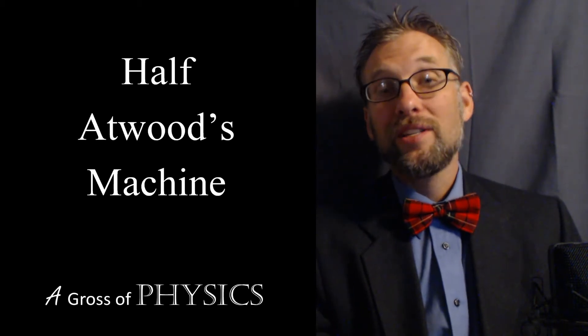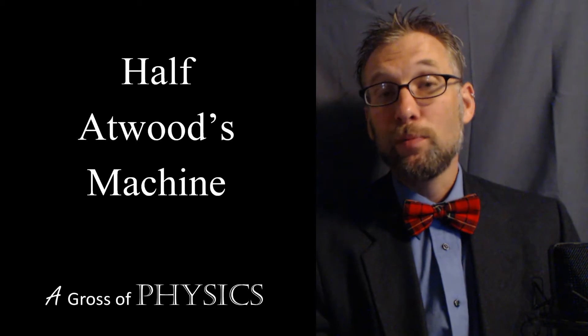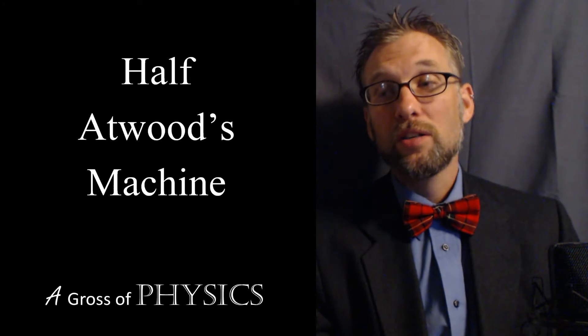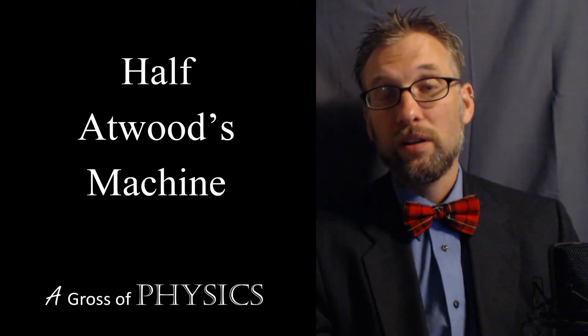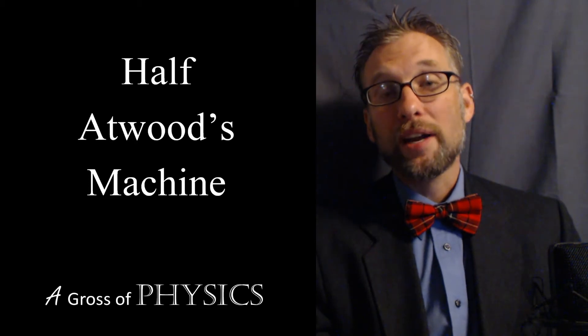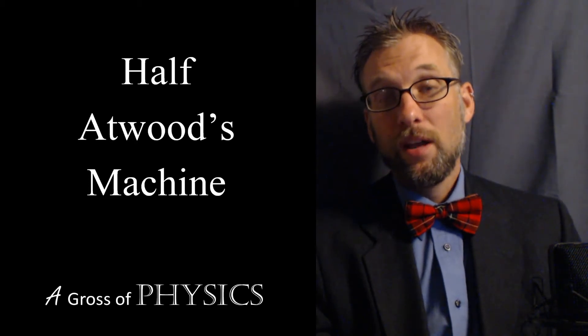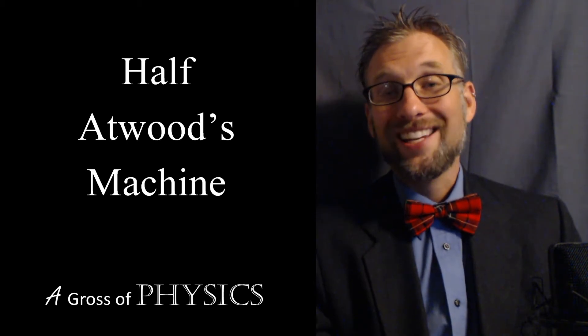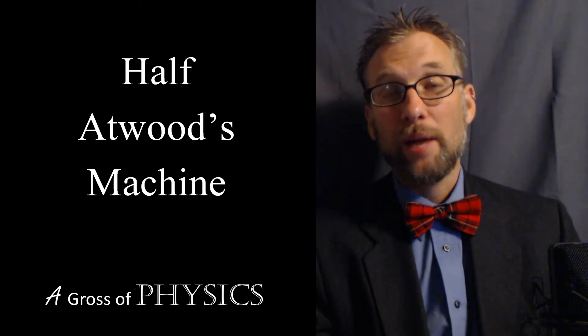We call this an Atwood's machine. It involves a pulley where you take two masses and place them on the pulley, causing the heavier object to move downward and the lighter mass to move up. With the two objects you can determine the acceleration of the system. Since we're dealing with gravitational acceleration, the value has to be between zero and 9.8.